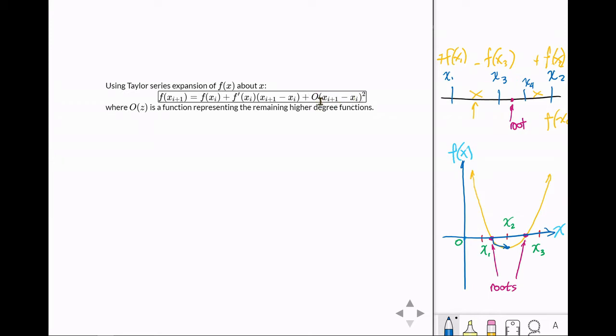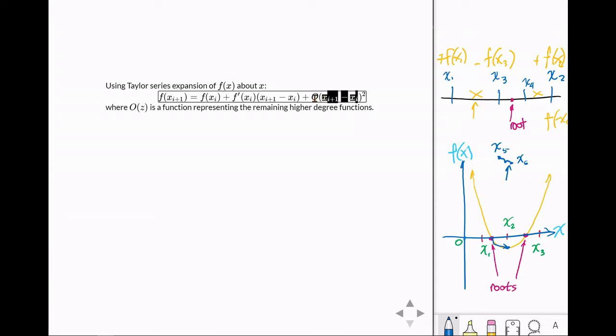We just take the function itself at point x1 (or xi in the general equation), plus the first derivative of that function times the difference of x1 and x2, plus a certain function that represents all other remaining higher-degree terms — so the second derivative, third derivative, and so on. You can define a line from x5 to x6, for example, with a Taylor series expansion as a combination of different derivatives. We assume that OZ represents those higher-degree functions.